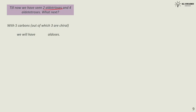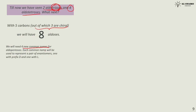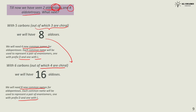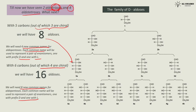So far we have seen two aldotrioses (three carbons: D and L glyceraldehyde) and four aldotetroses. With five carbons and three chiral carbons, we get eight aldopentoses — four new common names with D and L prefixes. With six carbons and four chiral carbons, we get sixteen aldohexoses, requiring eight new common names with D and L prefixes.